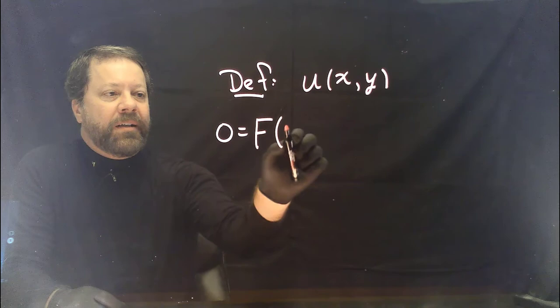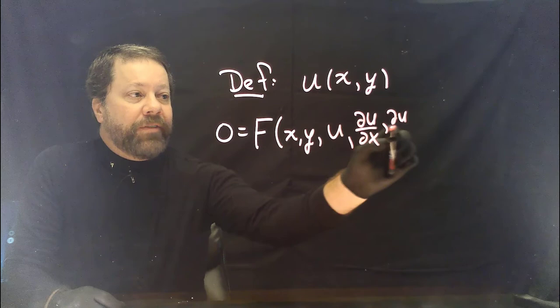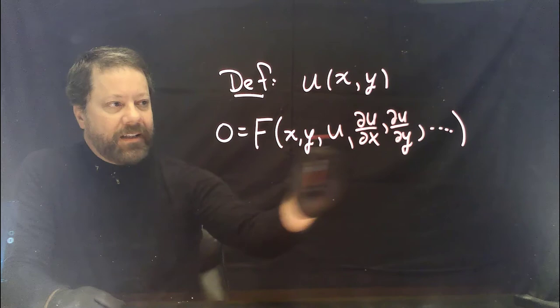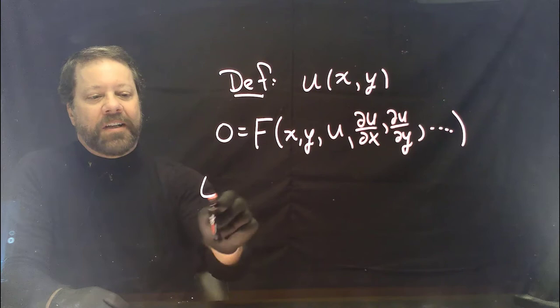The equation may involve the independent variables, it may involve u, the partial derivative of u with respect to x, partial derivative of u with respect to y, and higher order derivatives as well. The list must be finite — we're not going to allow an infinite number of derivatives, just a finite number.